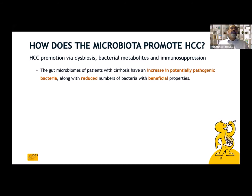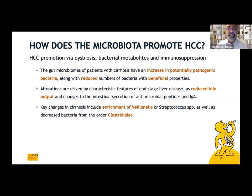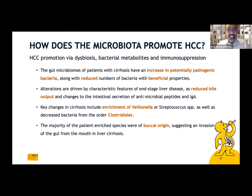The gut microbiomes of patients with cirrhosis have an increase in potentially pathogenic bacteria along with a reduced number of bacteria with beneficial properties. Alterations are driven by characteristic features of end-stage liver disease such as reduced bile output and changes to intestinal secretion of antimicrobial peptides. Key changes in cirrhosis include enrichment of Veillonella and Streptococcus species, as well as decreased bacteria from the order Clostridiales. The majority of enriched species were of buccal origin, suggesting an invasion of the gut from the mouth in liver cirrhosis.